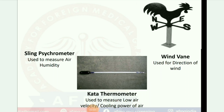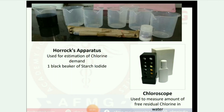Next image: kata thermometer — used to measure low air velocity or the cooling power of air. Next image: wind vane — used to determine the direction of wind. Next image: Horrocks apparatus — used for estimation of chlorine demand, using one black beaker of starch iodide.